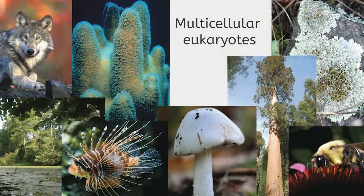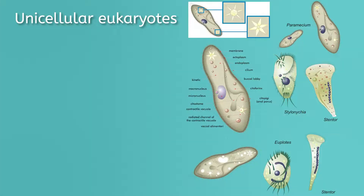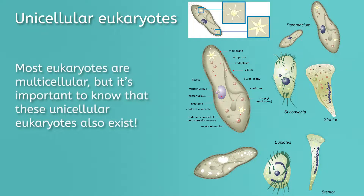At this point, you may think that all organisms with eukaryotic cells are multicellular and all organisms with a prokaryotic cell are unicellular, but the former isn't quite true. Some organisms are just one eukaryotic cell. These organisms are chromista, including algae, and protists, including molds. Most eukaryotes are multicellular, but it's important to know that these unicellular eukaryotes also exist.